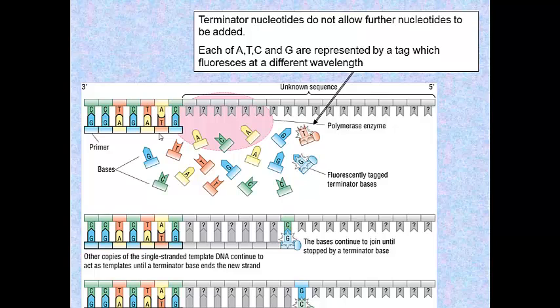And then, we have these free nucleotides around. These are DNA nucleotides. DNA nucleotides are G, T, A, etc.